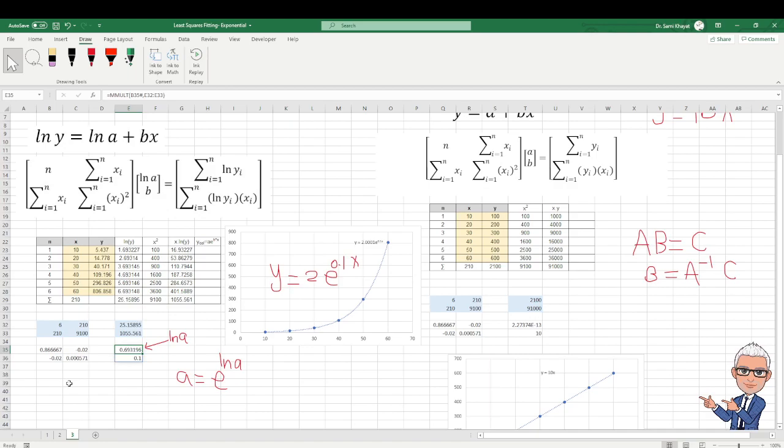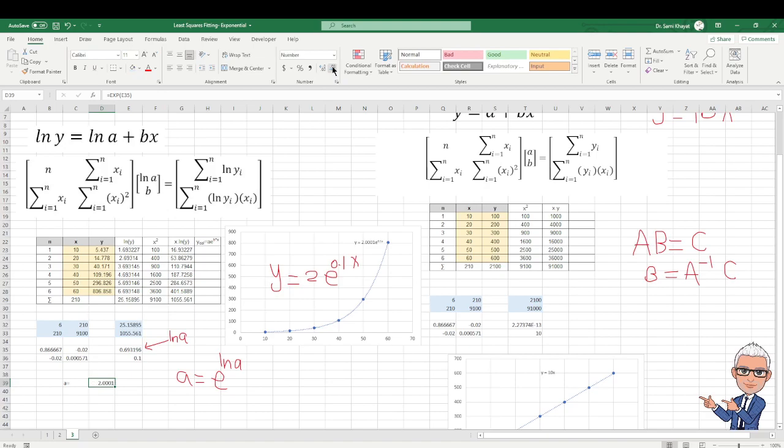Now how much A? A equals to the exponential, this is the command for exponential, of this number, enter. It is 2. You can fix it here, it equals 2. And then B here equals to this number. Now you can see how I find it.